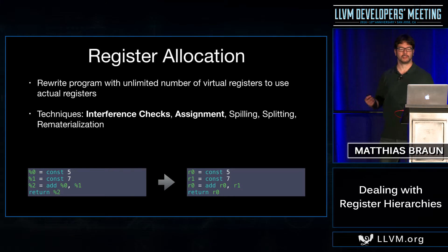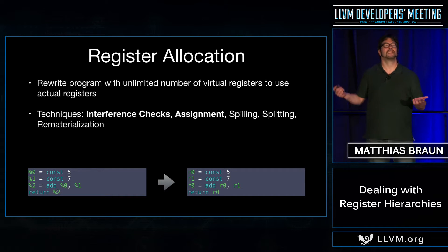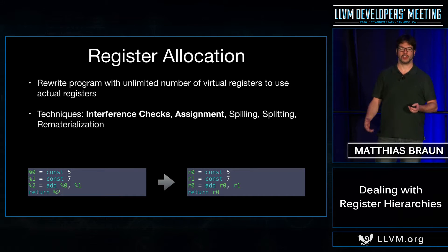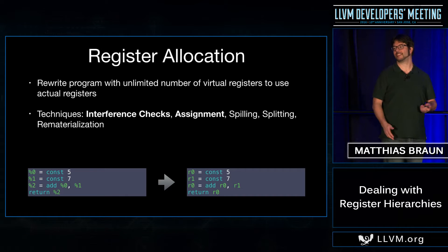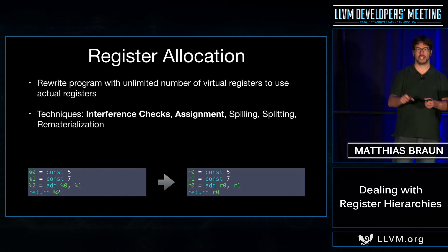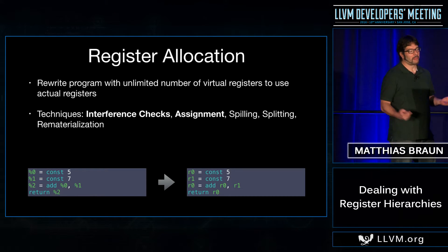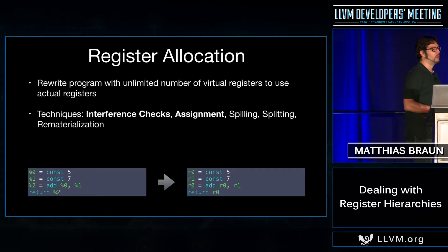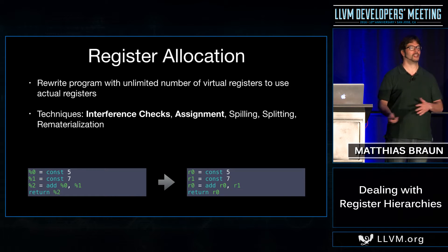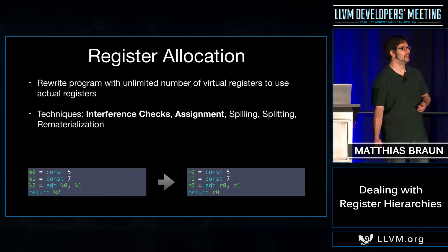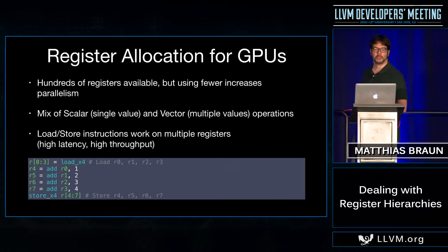This talk is about register hierarchies. Most of you probably know them from x86 where you can access a register as 64-bit RAX, 32-bit EAX, 16-bit AX, and the two 8-bit parts as AL and AH. While all the techniques I will present will work on CPU architectures, they don't bring a measurable benefit. So I will focus on an architecture where you actually see a lot of benefits — and that's GPUs.